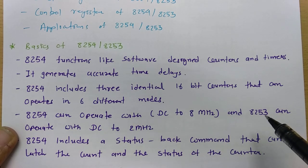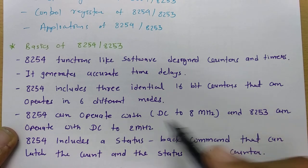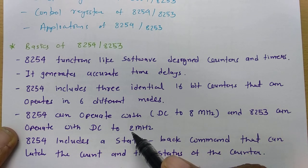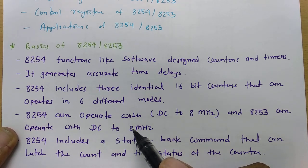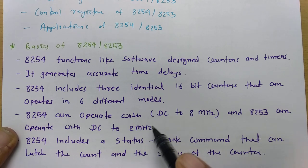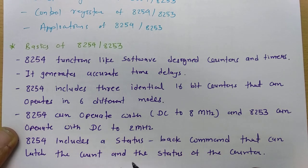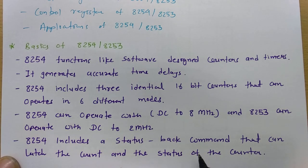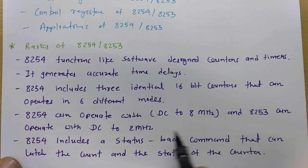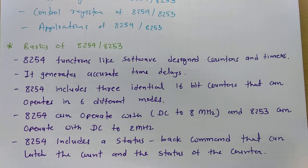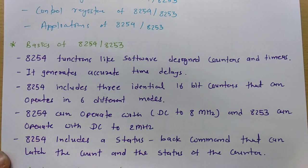So 8253 was the original version working with DC to 2 MHz, and then the advanced version 8254 was made with an operating frequency of DC to 8 MHz. Additionally, 8254 includes a status back command that can latch the count and status of the counter — a feature not available in 8253.